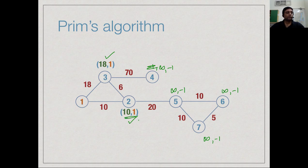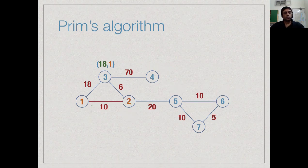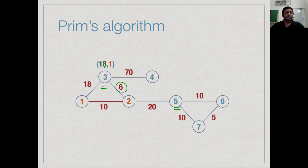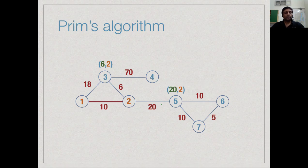Having added vertex 2, we update its unvisited neighbors: vertex 3 can now be reached with distance 6 via vertex 2, which is smaller than 18, so we update to distance 6 with neighbor 2. Vertex 5 gets distance 20 with neighbor 2. Now vertex 3 has distance 6 and vertex 5 has distance 20, so we pick vertex 3 next. Adding vertex 3, we update vertex 4 to distance 70 with neighbor 3.